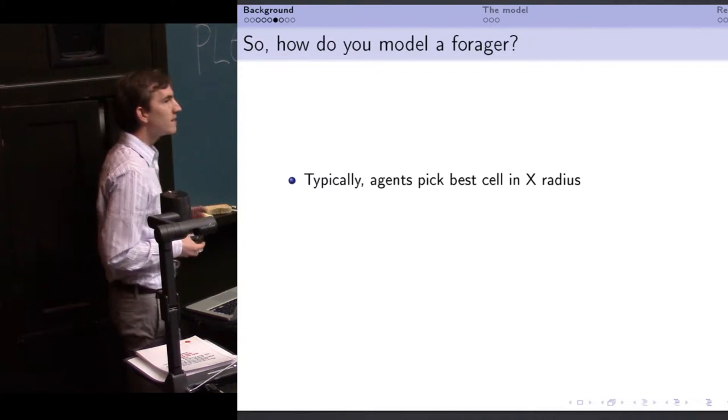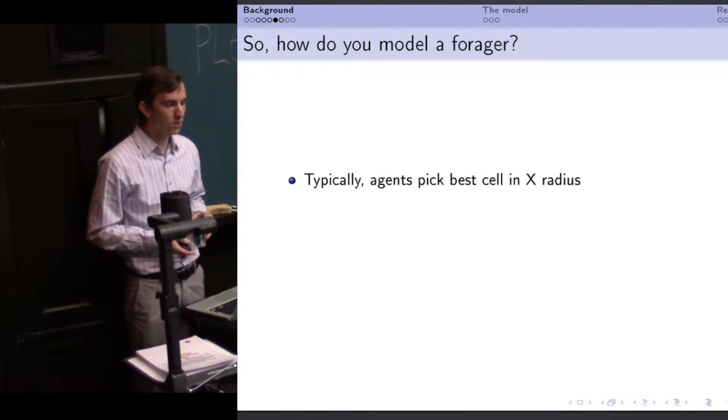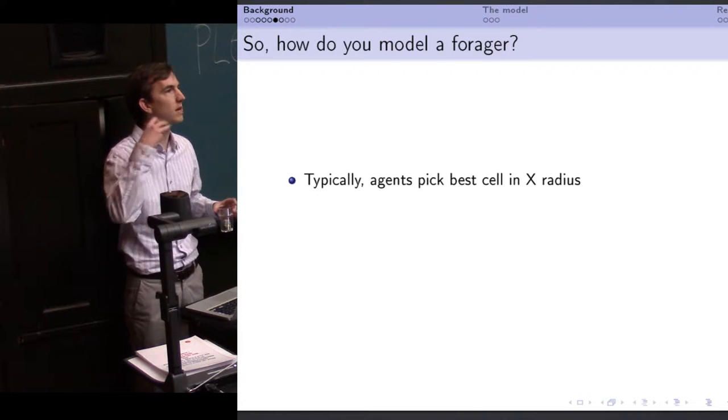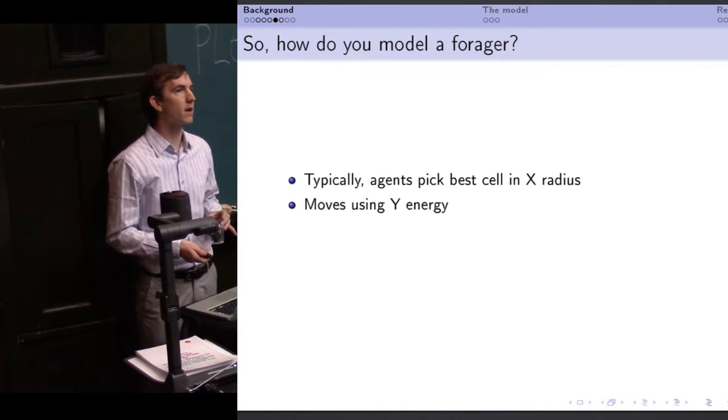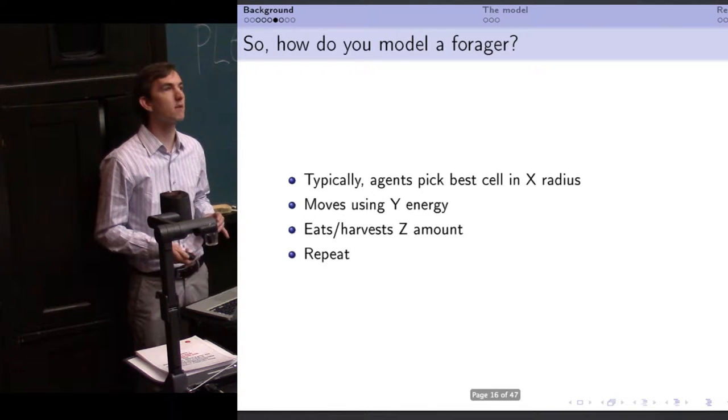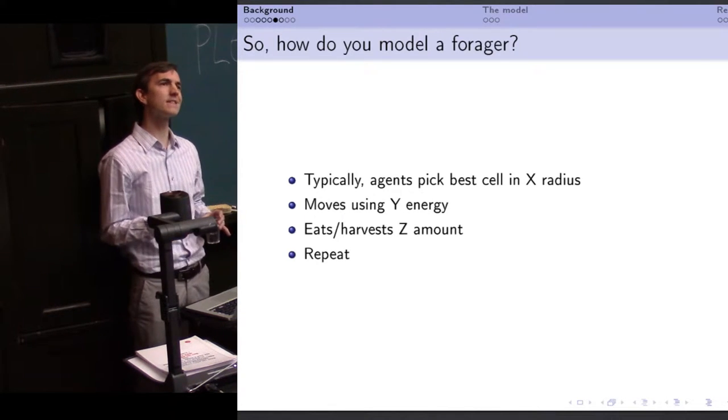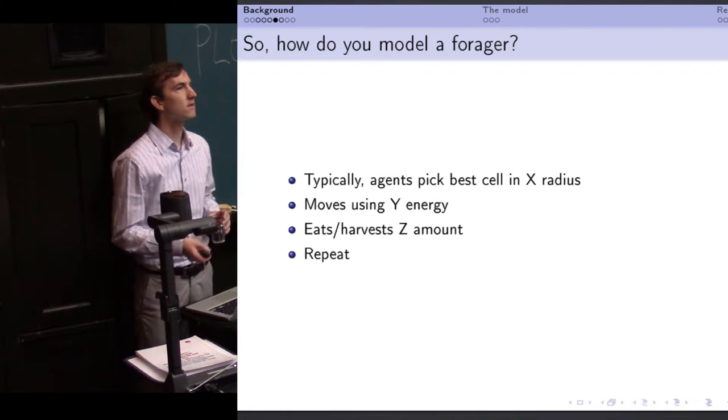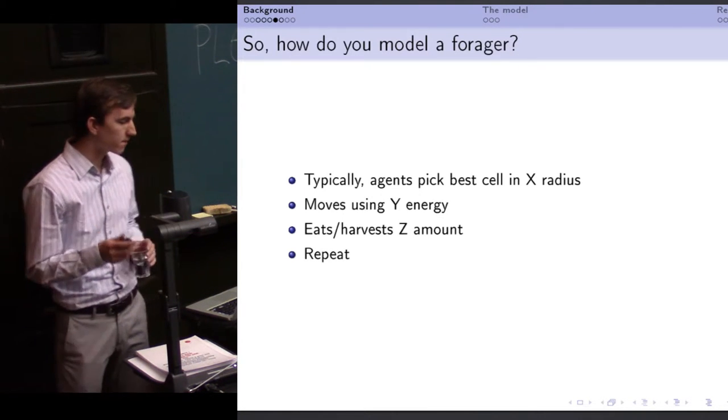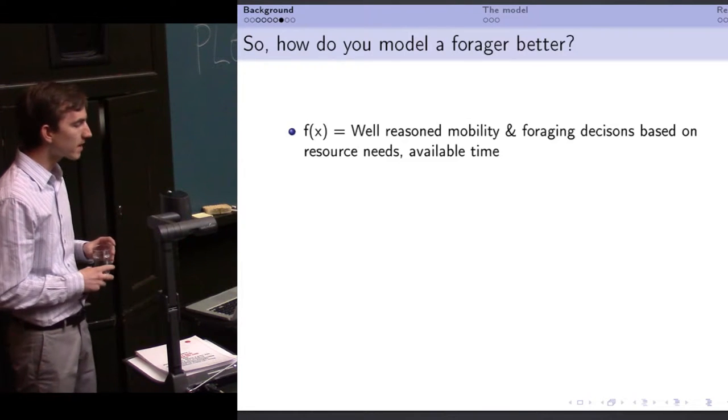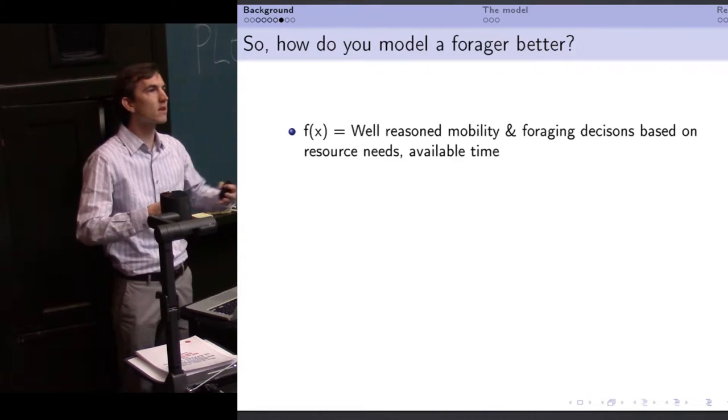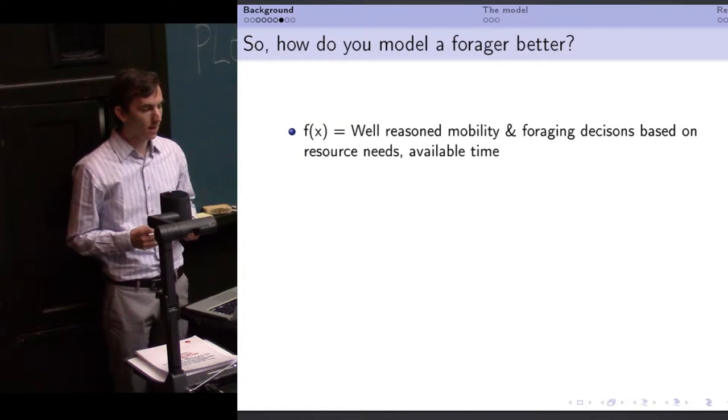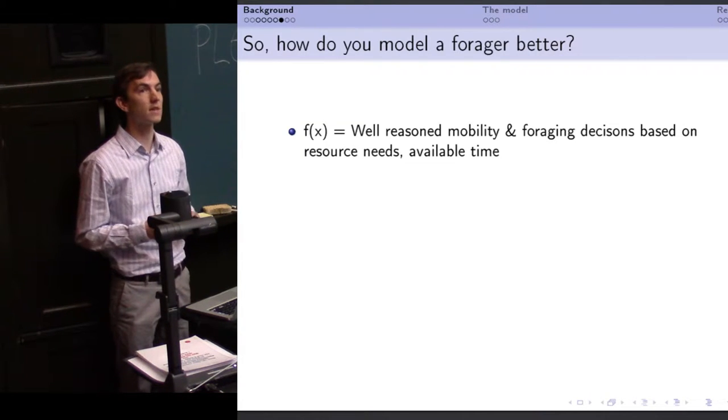So how do we model foraging? Well, in archaeology, typically modeling foraging has amounted to a much simpler model. Agents pick the best cell out of their local neighborhood, some X amount of perception radius. They move using some amount of energy, they harvest some amount of energy from that environment and then they repeat around and around and around. This is not exactly lining up well with optimal foraging theory. It's not yet sufficient to be modeling foraging. So how do we model foraging better? Well, at the root of it, we need to extract out of optimal foraging theory, a good algorithm for well-reasoned mobility and foraging decisions based on the available resources and time in the environment.